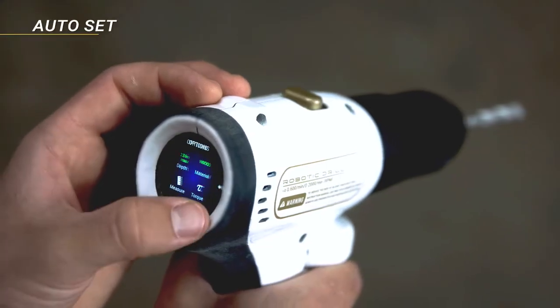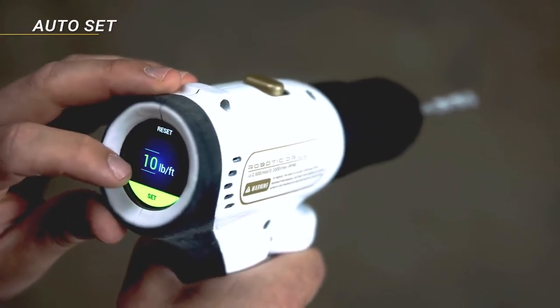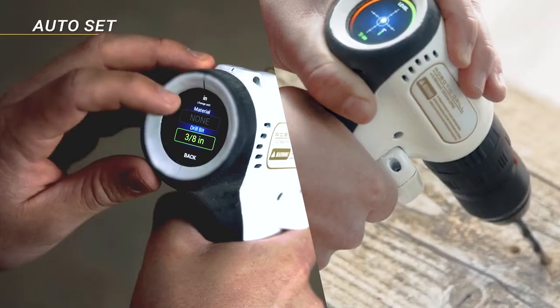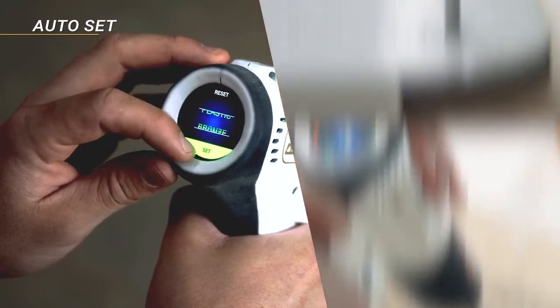And finally, auto-set allows you to automatically set torque speed, according to the material you're working with and the size of the drill bit. Of course, you can still adjust torque manually. We're here to improve, not extract.